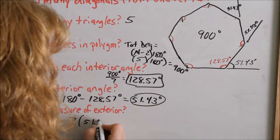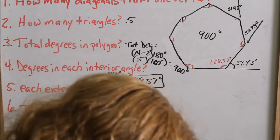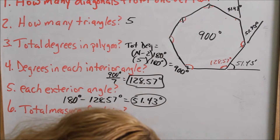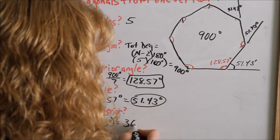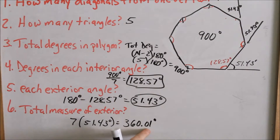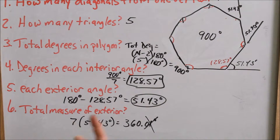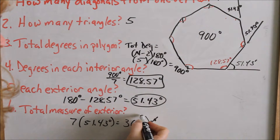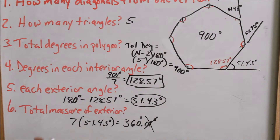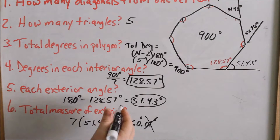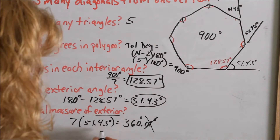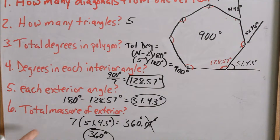Seven times 51.43 degrees comes out to 360.01 degrees — the 0.01 is from rounding to two decimals. You will find that for every polygon — a rectangle, a triangle, a hexagon, an octagon — all of your exterior angles will add up to 360 degrees. The total exterior of any polygon will always add up to 360 degrees.